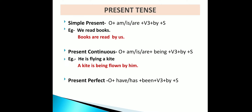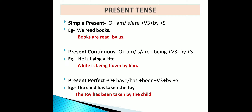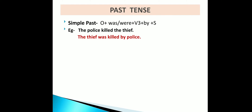For present perfect tense, use the given structure. Example: 'The child has taken the toy' becomes 'The toy has been taken by the child.' For simple past tense, the structure is: object + was/were + verb (third form) + by + subject. Example: 'The police killed the thief' becomes 'The thief was killed by the police.'